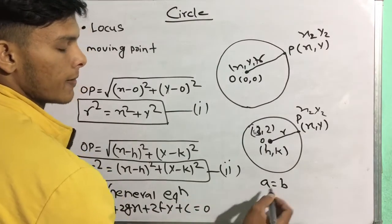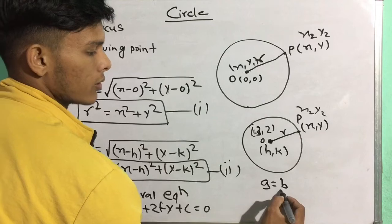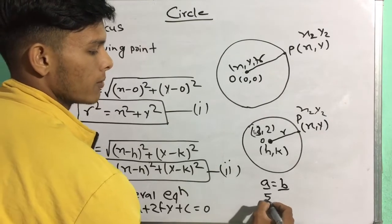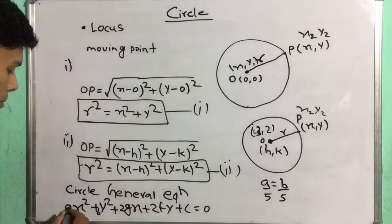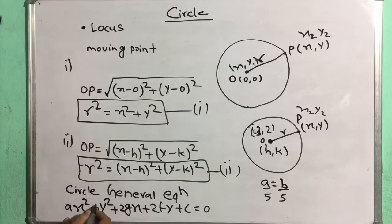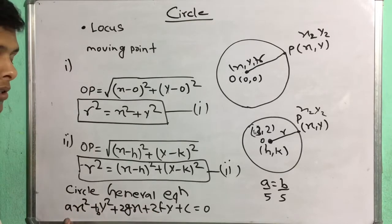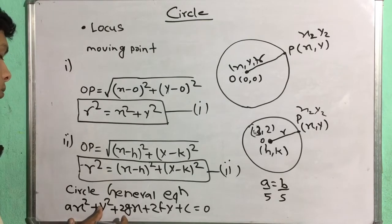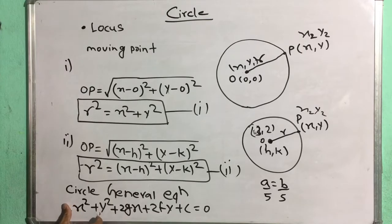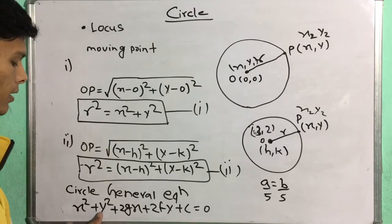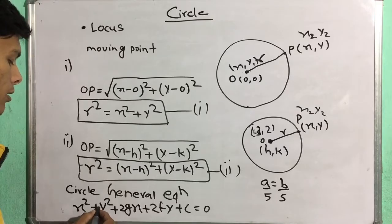Here the coefficient of x² equals the coefficient of y², that is a is equal to b. We have a is equal to b, and dividing gives us 1. So x² and y² have equal coefficients.